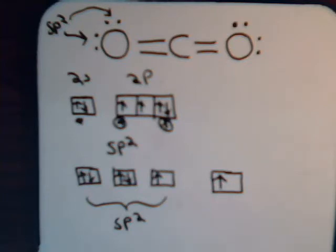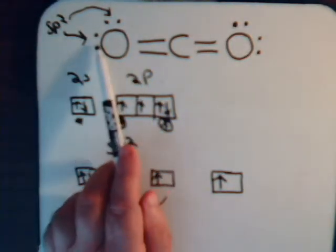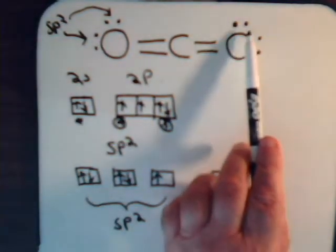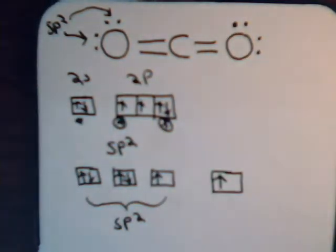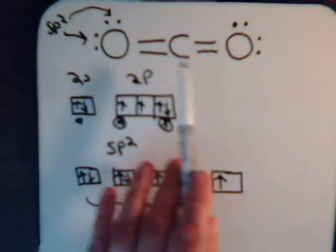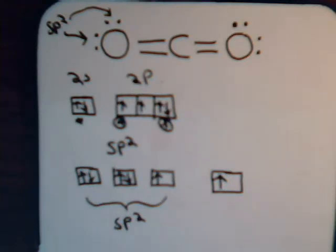This gives carbon a complete octet, and each oxygen atom has an unshared pair of electrons. This is perfectly valid, but that's not what happens. Carbon is sp hybridized. But let's take another look now at oxygen.